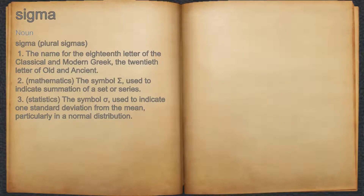Sigma. Noun. 1. The name for the 18th letter of the classical and modern Greek alphabet, the 20th letter of old and ancient Greek.